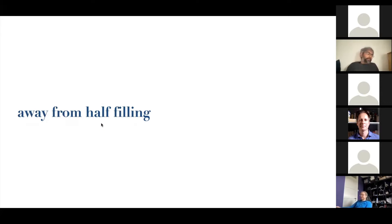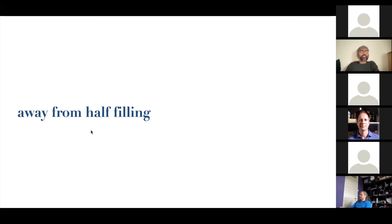Now I want to talk about ways in which the transport in this model is not regular diffusion. The first thing is what happens if you're away from half-filling — that is, if you have a net imbalance between up and down spins. Remember the total number of up spins is conserved, so if you start in a state that's mostly spin-polarized, it stays spin-polarized. Let's think about what happens in a sector of the problem with a large net polarization — most spins are down and there's some small fraction f that are up.